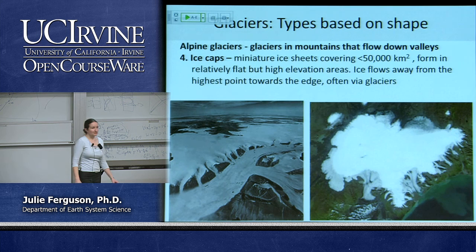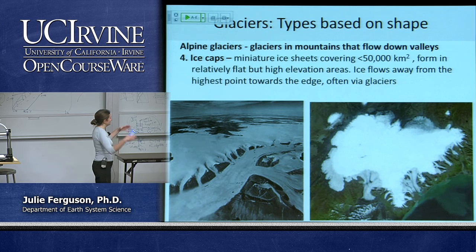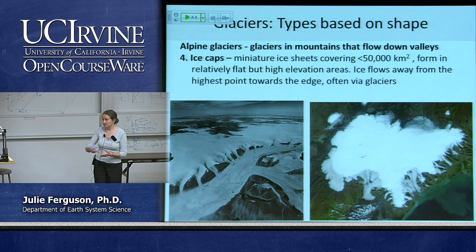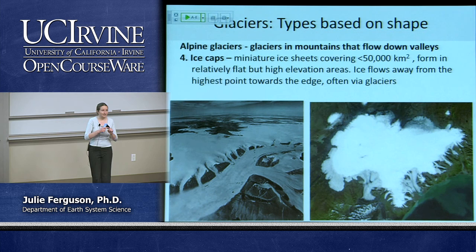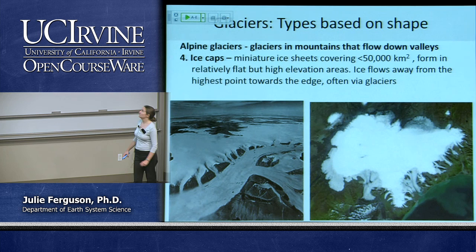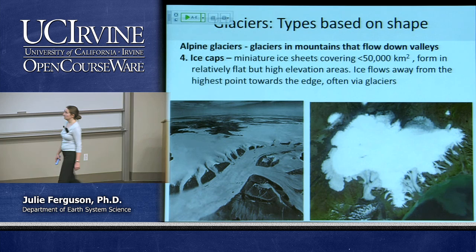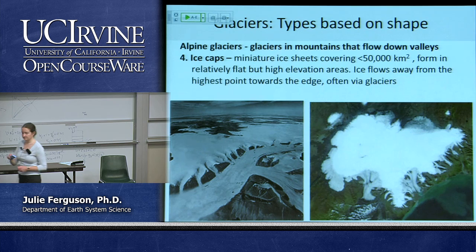We also have ice caps — not small individual glaciers, but large areas of ice sitting on top of a bunch of mountains, less than 50,000 square kilometres. Iceland is a good example: you can see little fingers of valley glaciers coming out at the edges from the much bigger ice cap above, with smaller glaciers meeting large valley glaciers below.